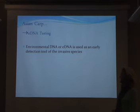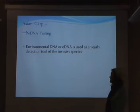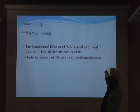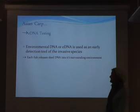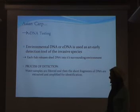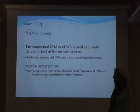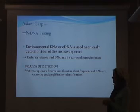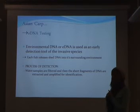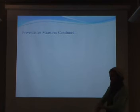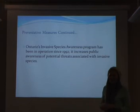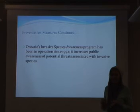Environmental DNA, or eDNA, is used as an early detection tool for invasive species. Each fish releases shed DNA into its surrounding environment. Water samples are taken, filtered, and short fragments of DNA are extracted and amplified for identification. Shed DNA from Asian carp has been found past the electronic barrier, though it is not yet confirmed whether the fish have actually reached the Great Lakes.